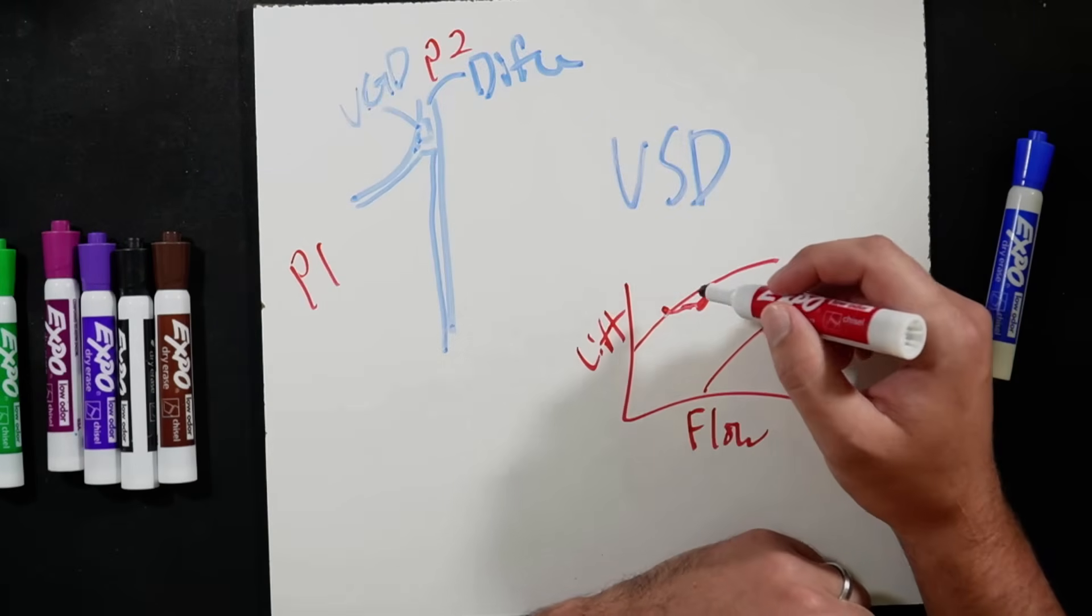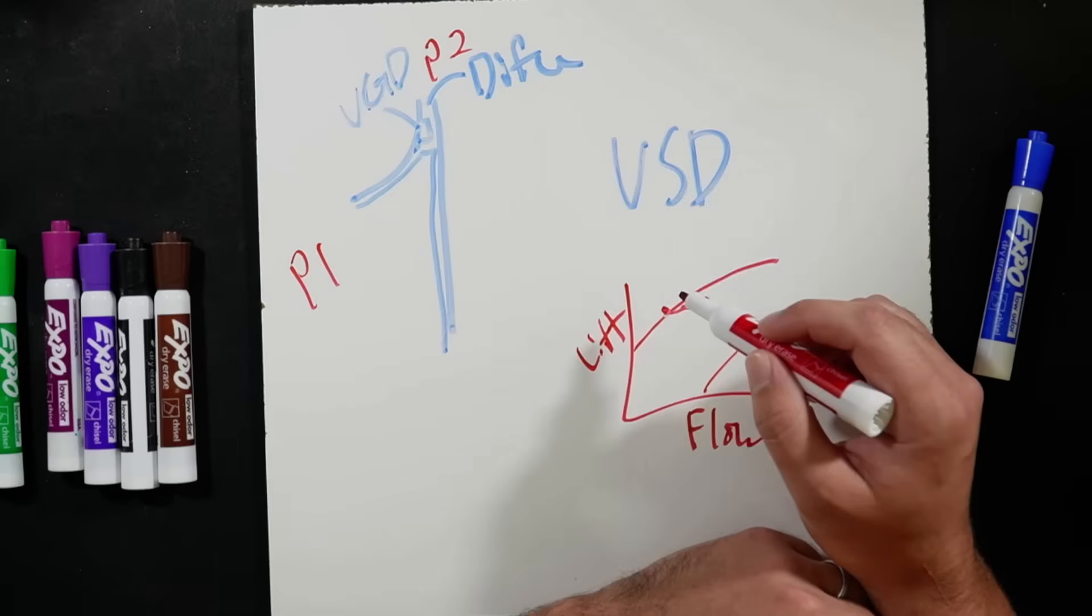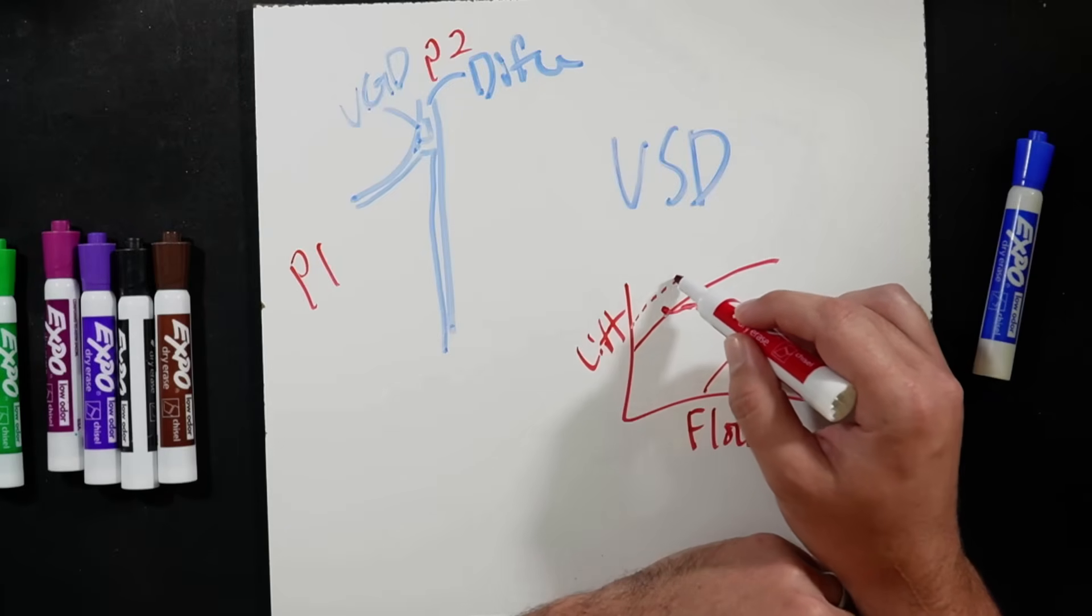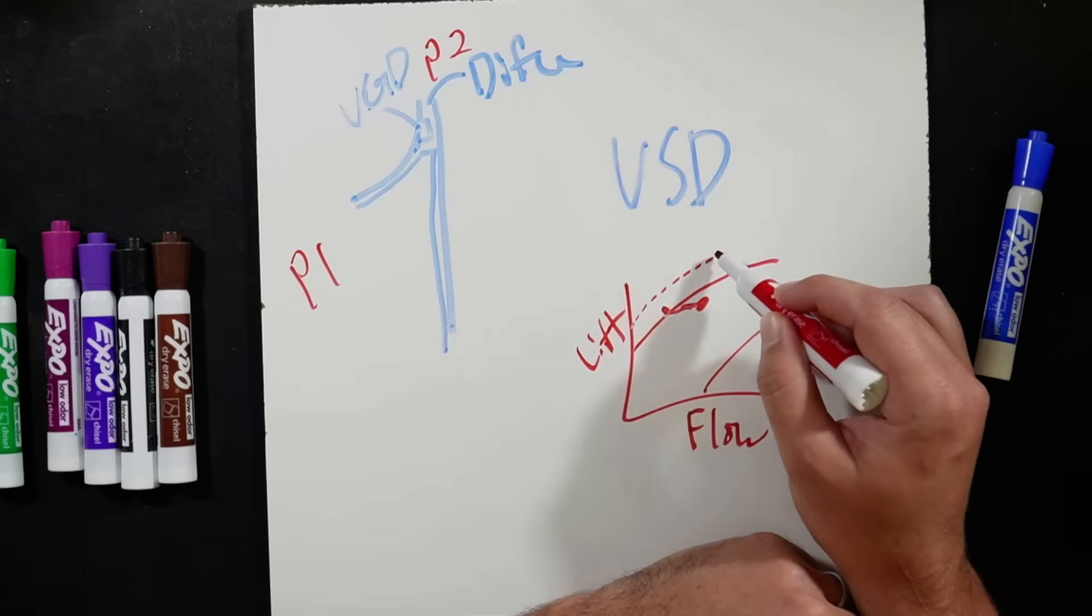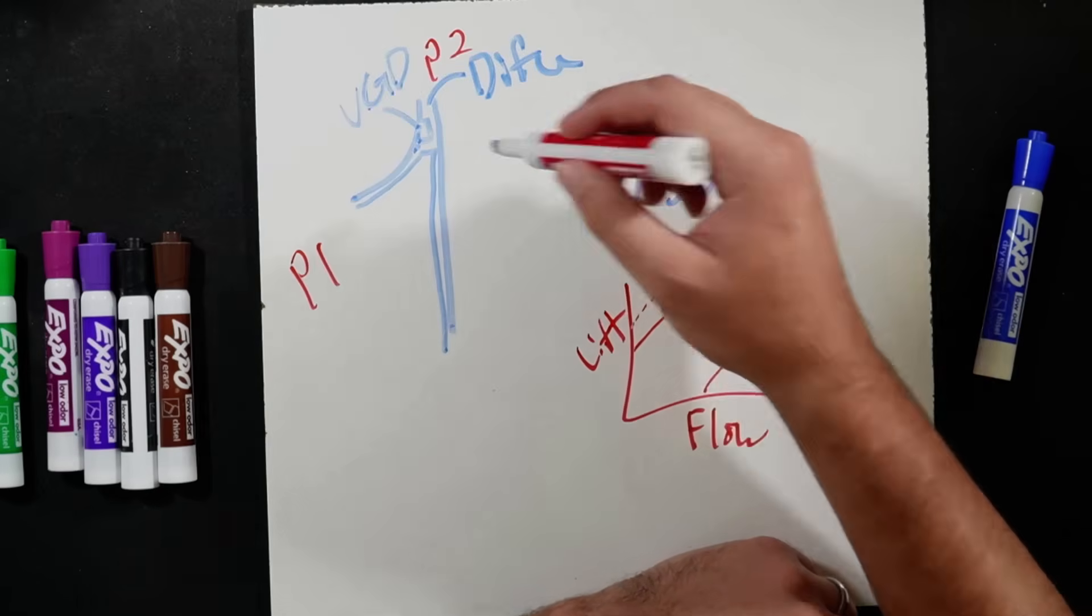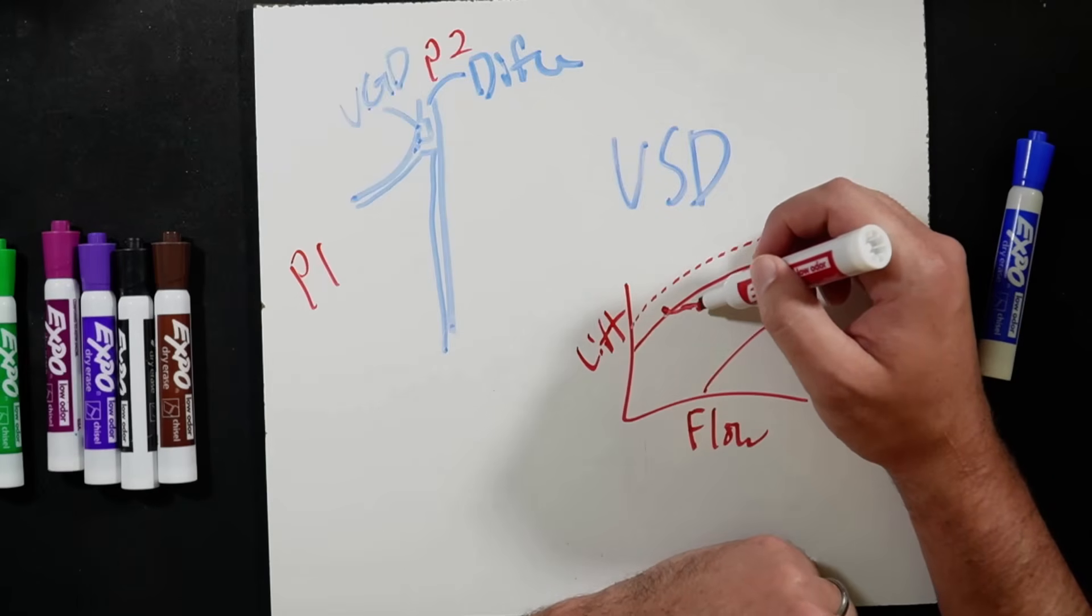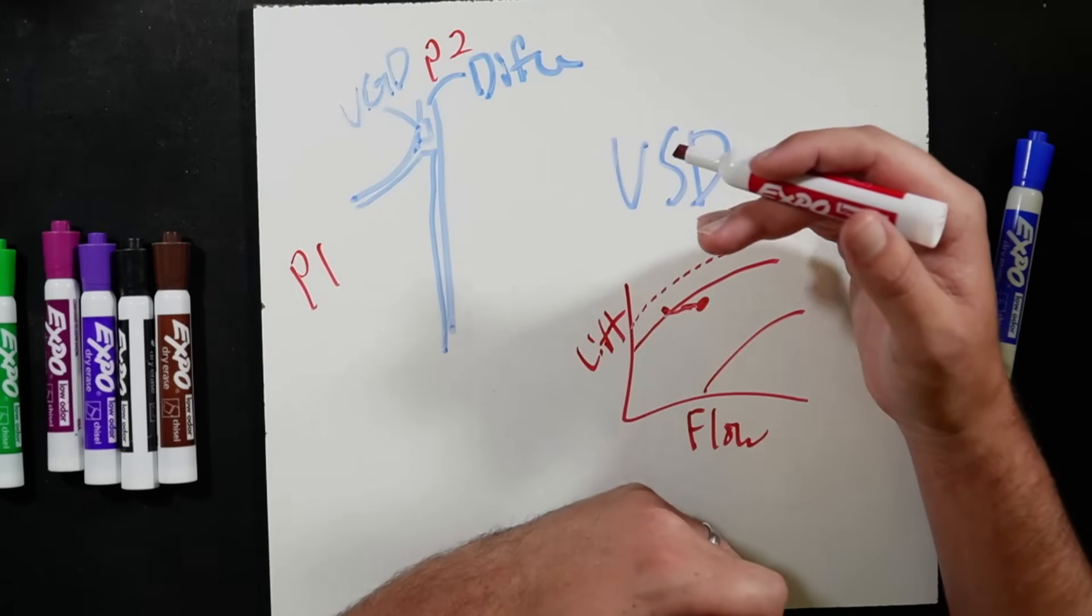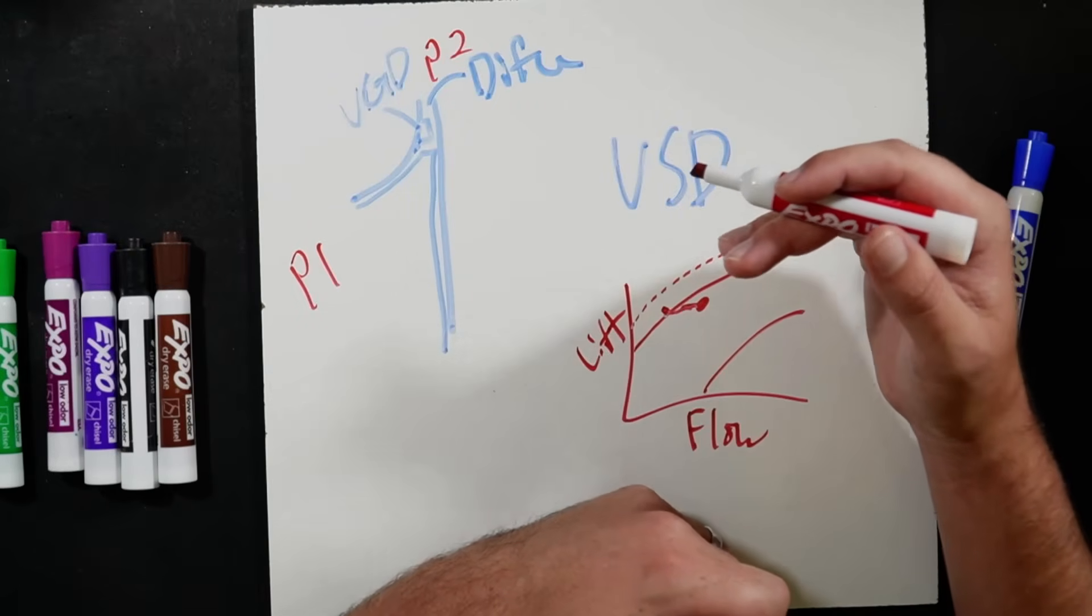Where this VGD, part of what it does, the best way I could try to describe it on this graph would be it can adjust how much lift we can handle. So just imagine that with this VGD, by using it, we're going to be able to handle a higher lift without going into a stall or a surge condition.